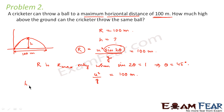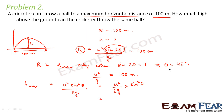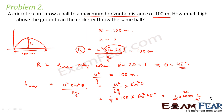We have to calculate the maximum height: H = u²sin²θ / 2g = (u²/g) × sin²θ / 2. We know θ = 45° and u²/g = 100 m, so H = (1/2) × 100 × sin²45° = (1/2) × 100 × (1/2) = 25 meters. Therefore the maximum height that the ball can reach is 25 meters.